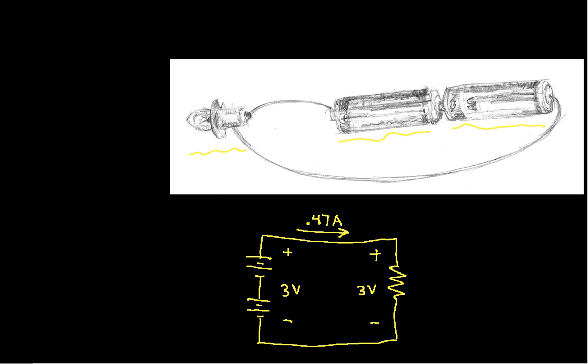And below this I've also put the schematic of this circuit. So I have the two batteries and I have the light bulb modeled as a resistor. So we'll use this circuit as our first example of how to do power computations and then we'll do a couple others as well.